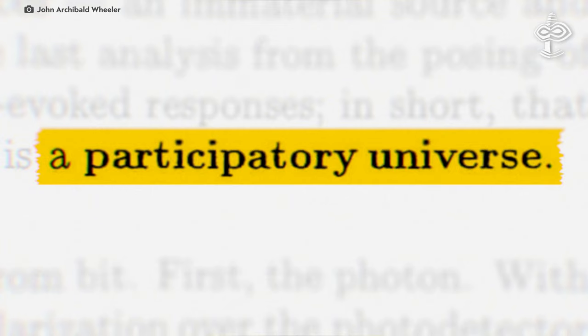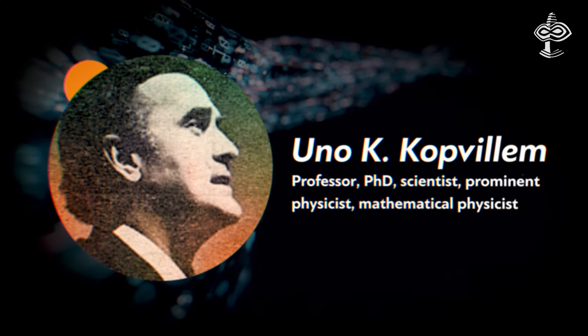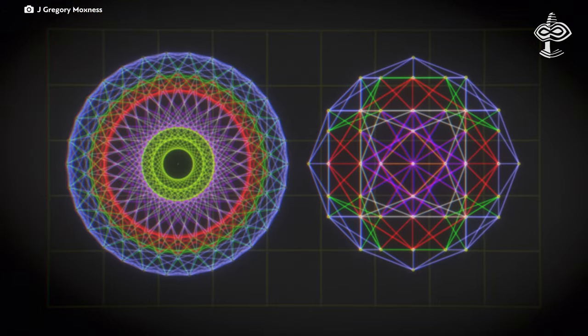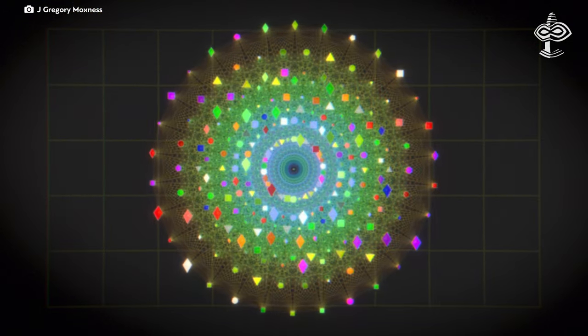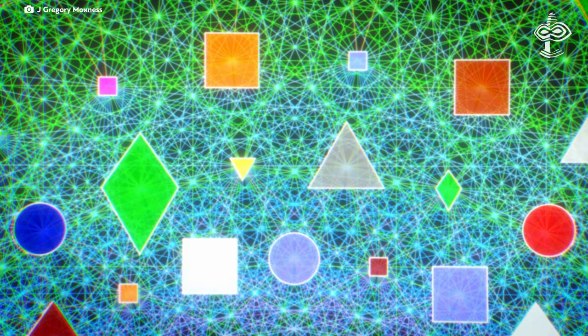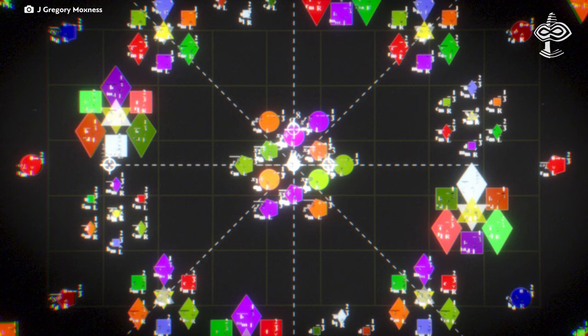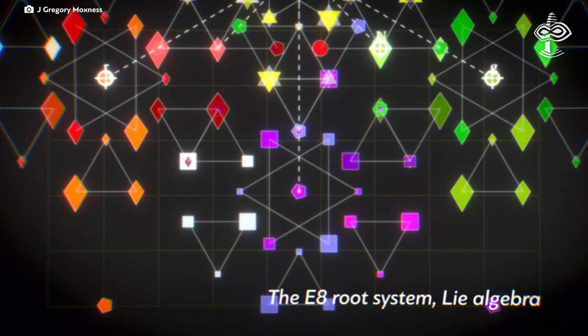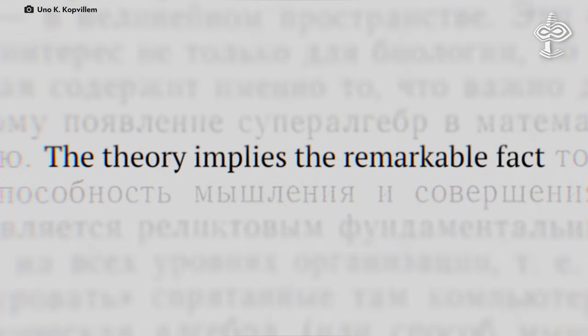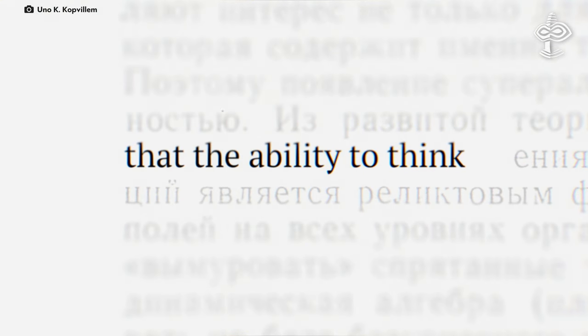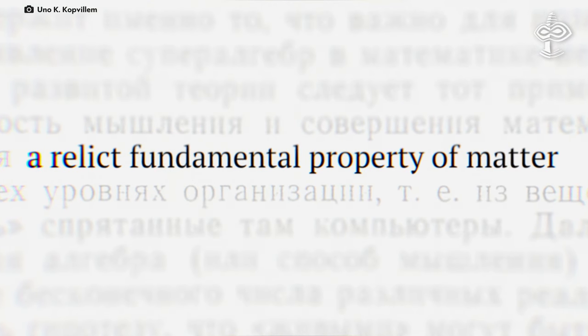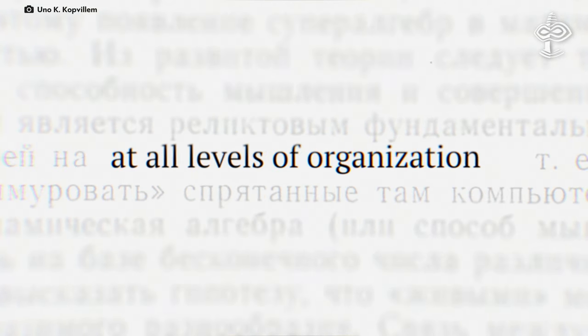Another prominent theoretical physicist, Uno Capvilliam, examines how mathematical constructs, such as some super-algebras, can model complex transformations in the universe. His idea suggests that systems can undergo changes in their complexity. These changes could involve transitions like turning from non-living to living matter and vice versa. He wrote that the theory implies the remarkable fact that the ability to think and perform mathematical operations is a relict fundamental property of matter and fields at all levels of organization.